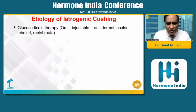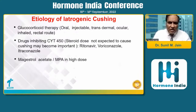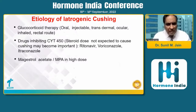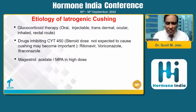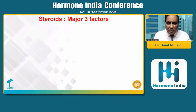Any route of steroid administration has been reported to cause Cushing's, with oral and injectable being most common. There are also drugs that inhibit the cytochrome P450 pathway — like antifungals voriconazole, itraconazole, and ritonavir — and if patients receive these drugs simultaneously with steroids, the steroid potency increases many times, causing exogenous Cushing's. Megestrol and high-dose medroxyprogesterone acetate also work like glucocorticoids. Steroids given in herbal and alternative therapies are, in my clinical experience, one of the most common causes.